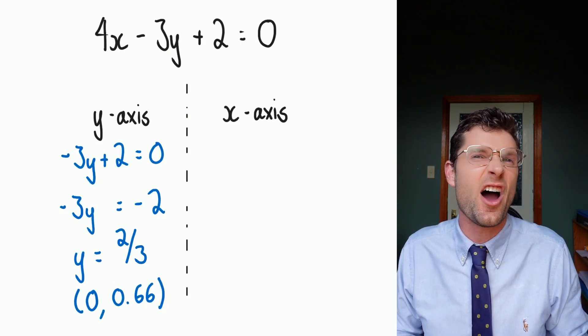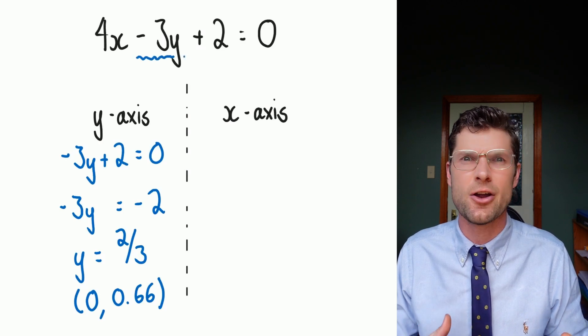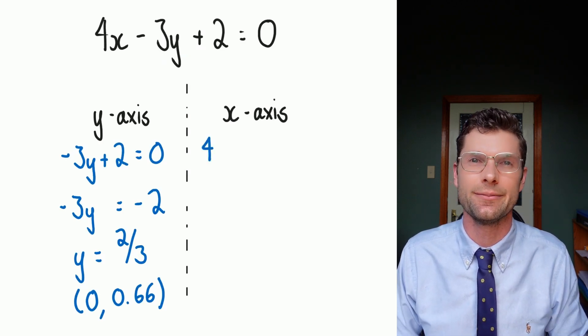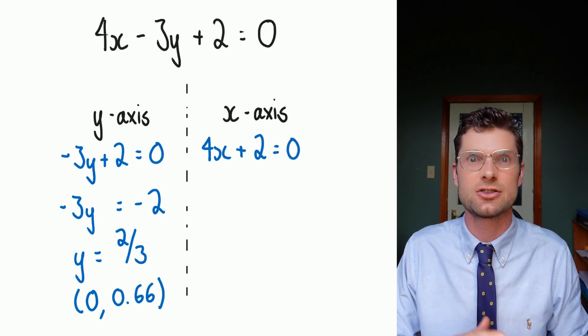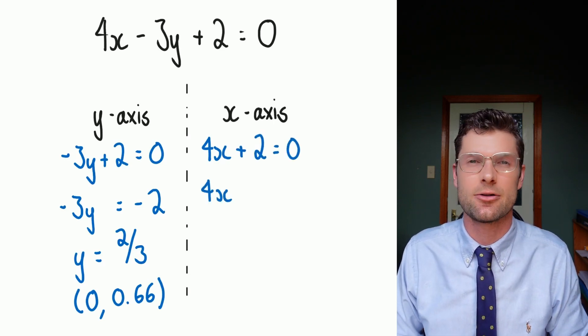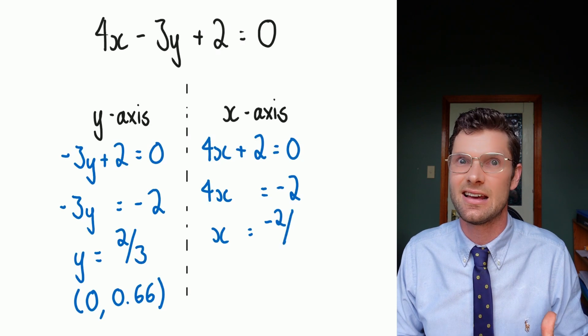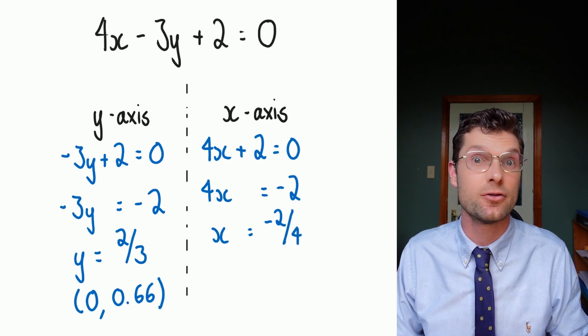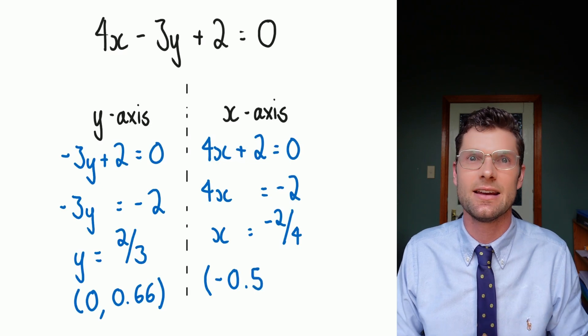So now for the x-axis, I know that I've got to sub in y is equal to zero, so I'm not actually going to write it out. I know that 3 times 0 is 0, so I can just ignore it. This leaves me with 4x plus 2 is equal to 0. Minus 2 from both sides, I've got 4x is equal to negative 2. Divide both sides by 4, and I've got x is equal to negative 2 over 4. That's the same as negative a half or negative 0.5. So my x-intercept is going to be at negative 0.5, 0.